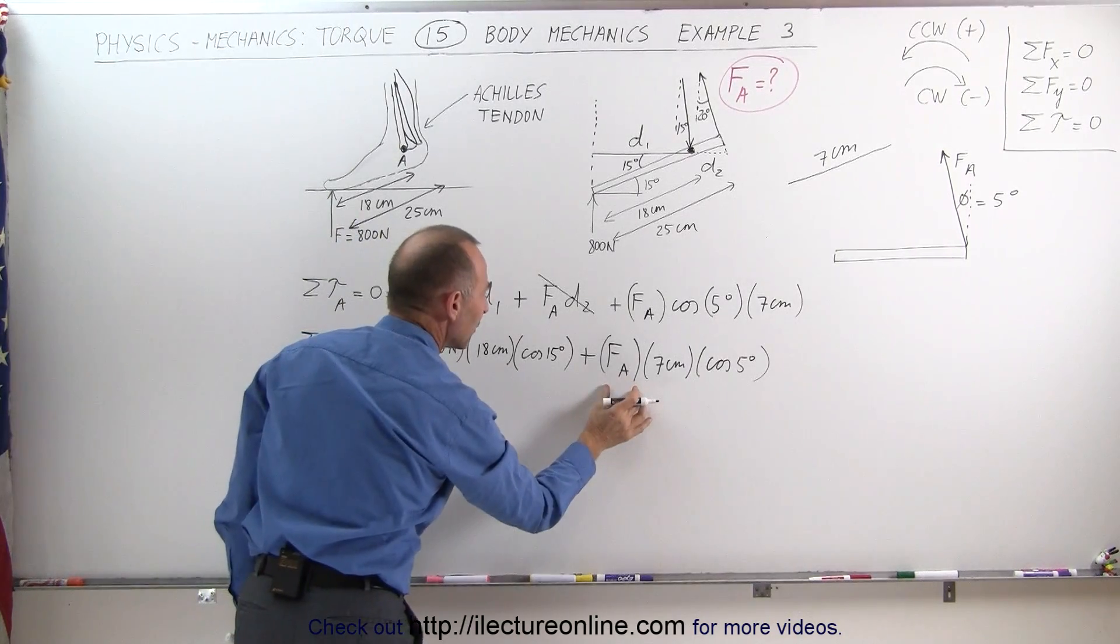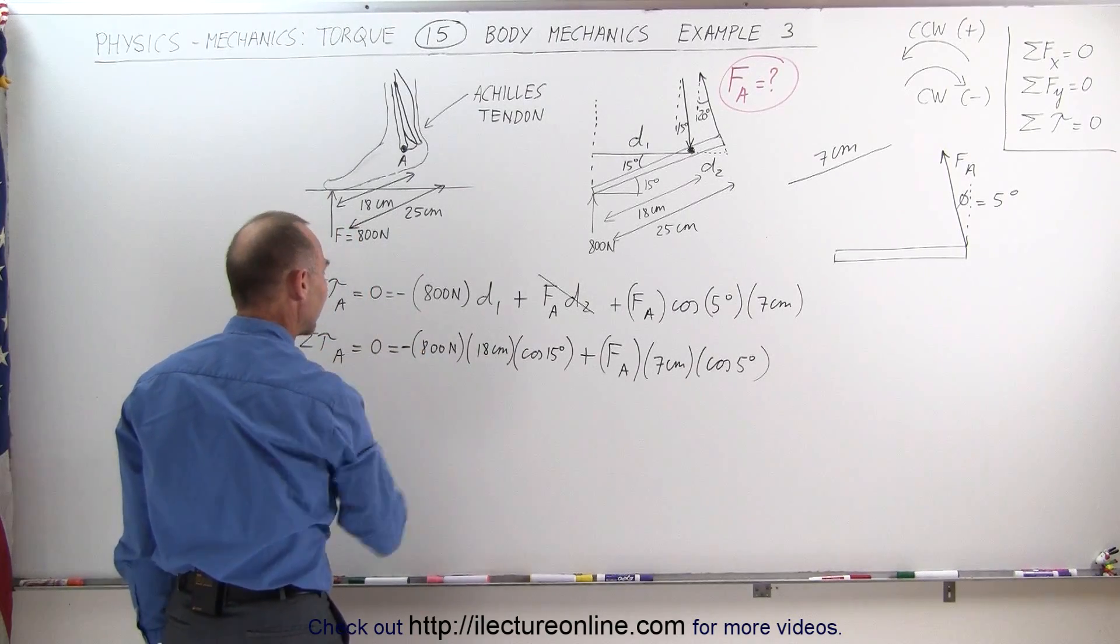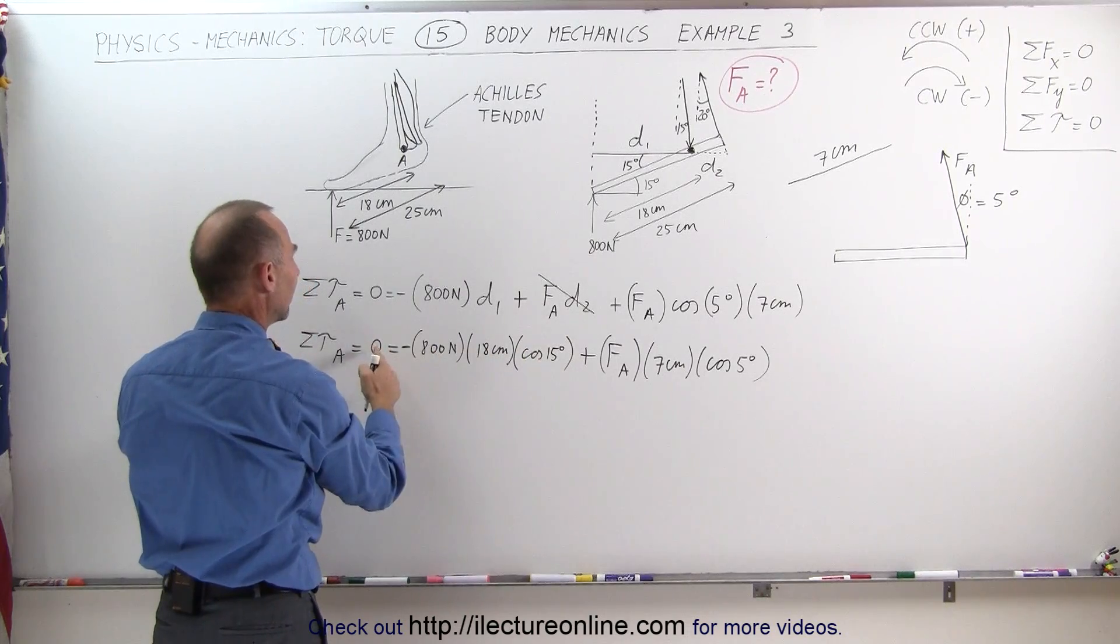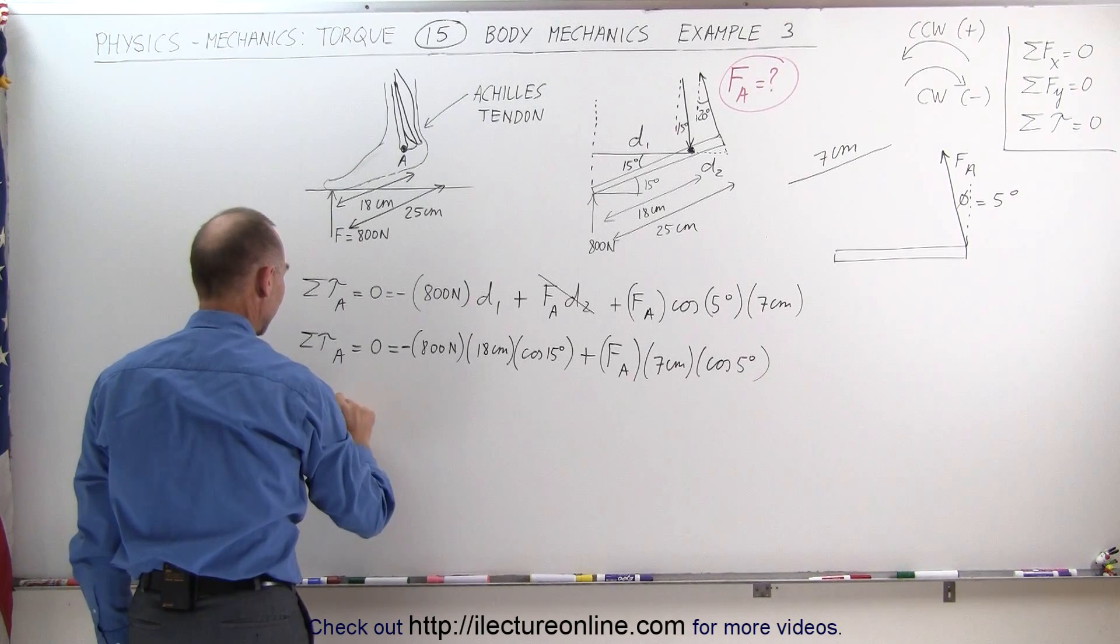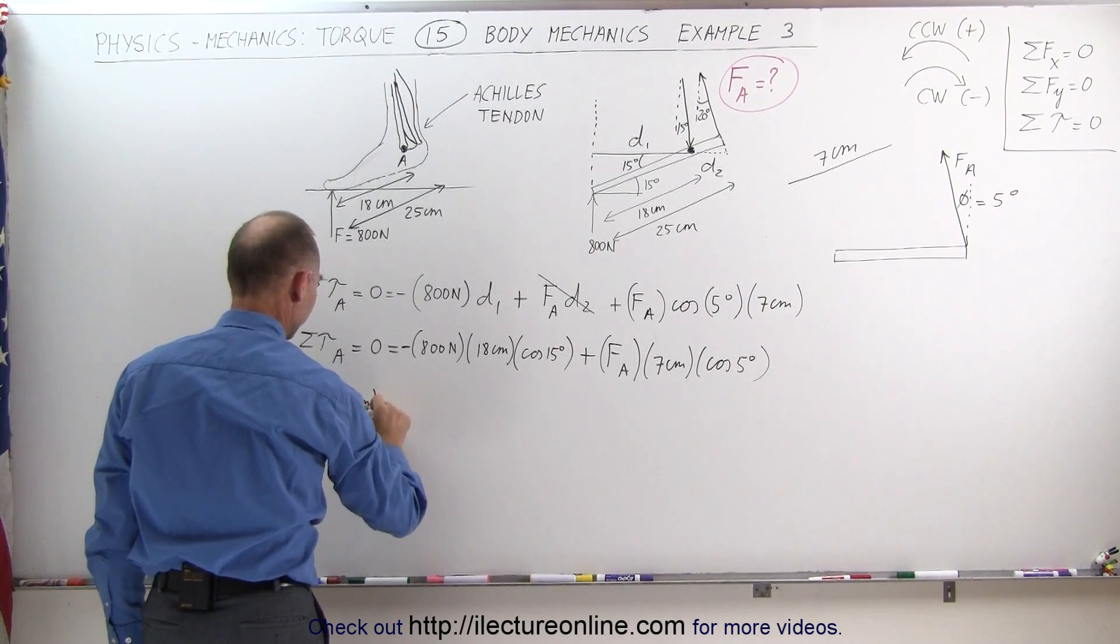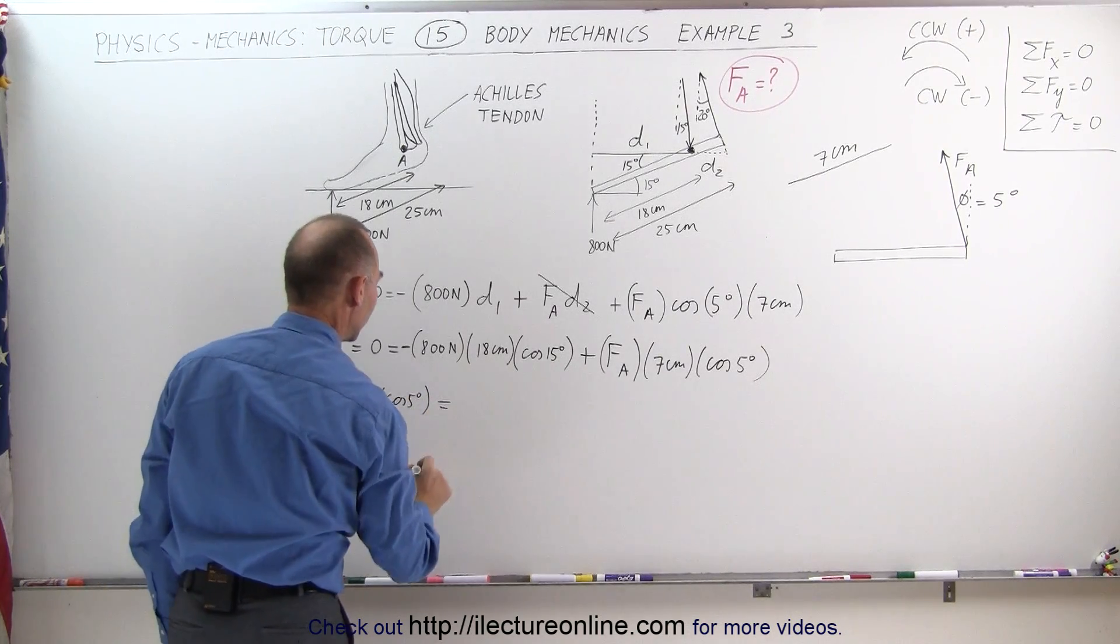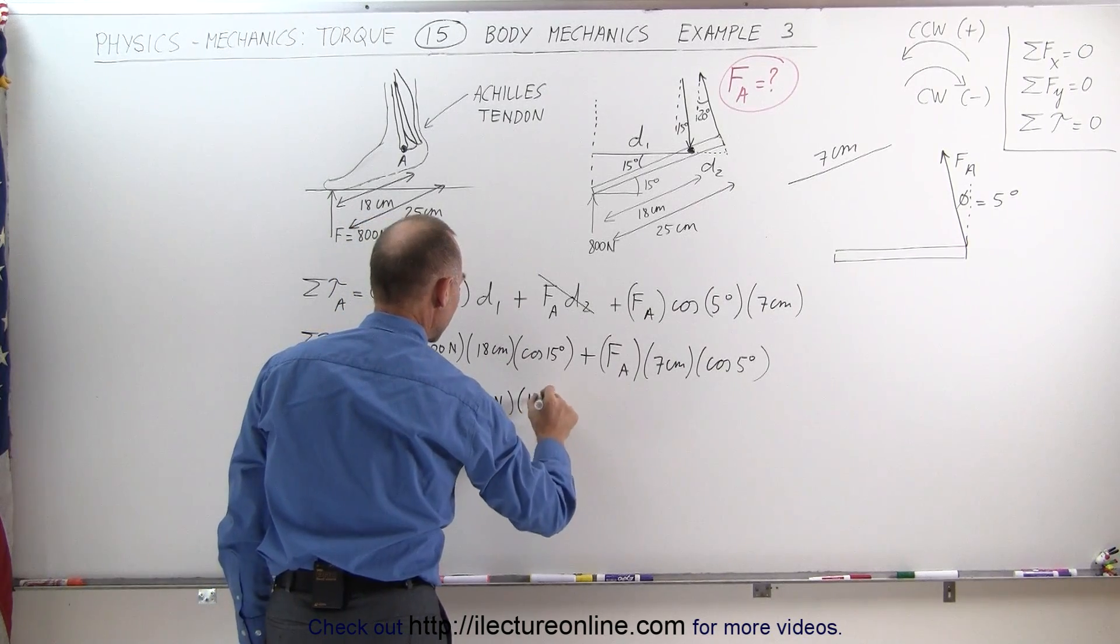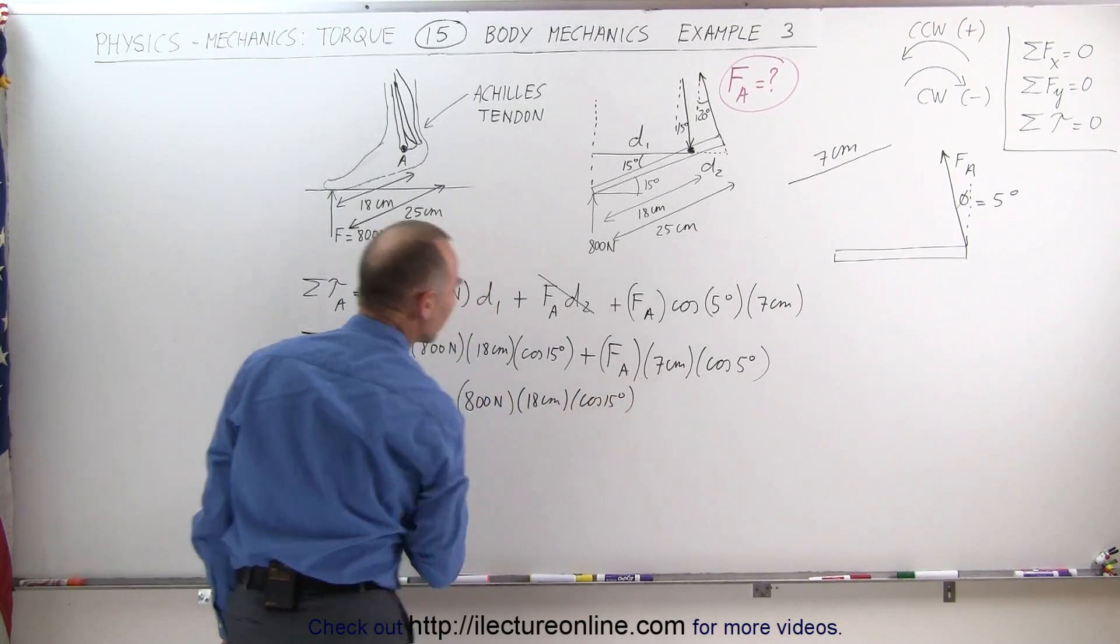Now we're ready to solve for F sub A which means we're going to move this to the other side and I forgot the negative sign, can't do that otherwise it won't work out, this is still negative. We move to the other side becomes positive when we turn the equation around. We get the force caused by the Achilles tendon times 7 centimeters times the cosine of 5 degrees is equal to 800 newtons times 18 centimeters times the cosine of 15 degrees.